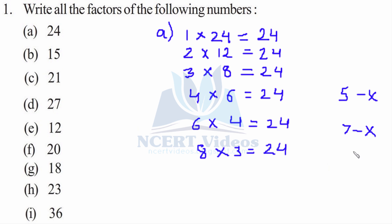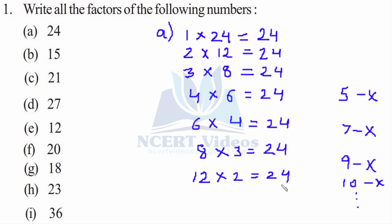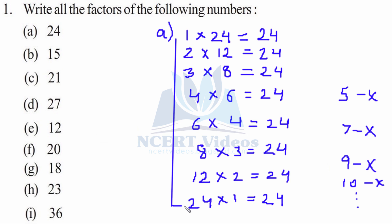8 — three times 9 is not. 10 is again not a factor. And 12 times 2 is 24. The last one would be 24 into 1. So these are the factors: 1, 2, 3, 4, 6, 8, 12, and 24 itself. So these are the factors.